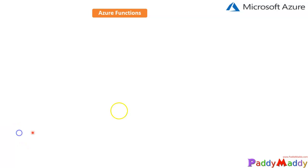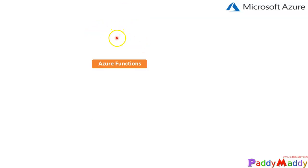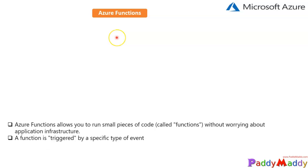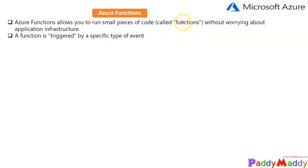Hello and welcome back. In this lecture we're going to learn about Azure Functions. Within functions, you have a small piece of code called a function. What it does is it can trigger any kind of specified event that you put in that code — that's where the functions will work.